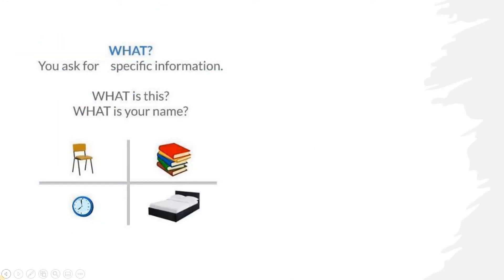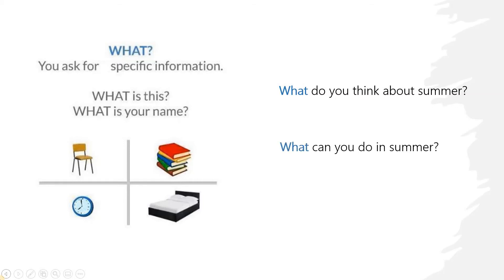We use the question word WHAT to ask for specific information. What is this? Or what is your name? What do you think about summer? What can you do in summer? Or another example: what is your favorite season? We use WHAT when we need to know some specific information.